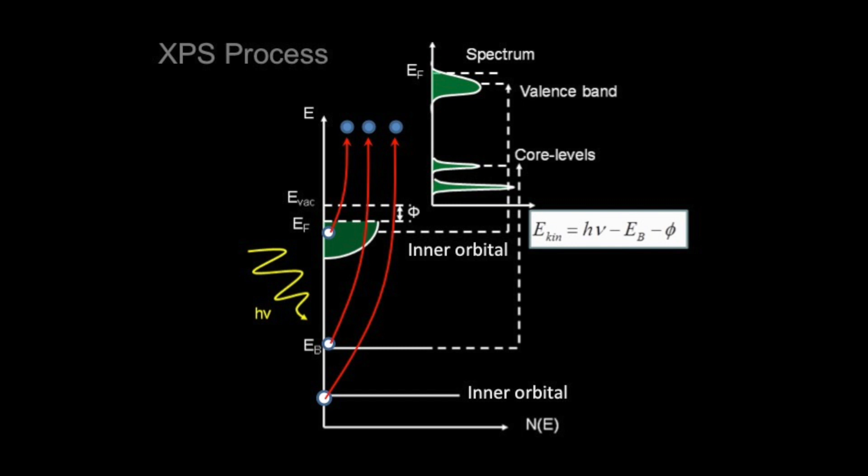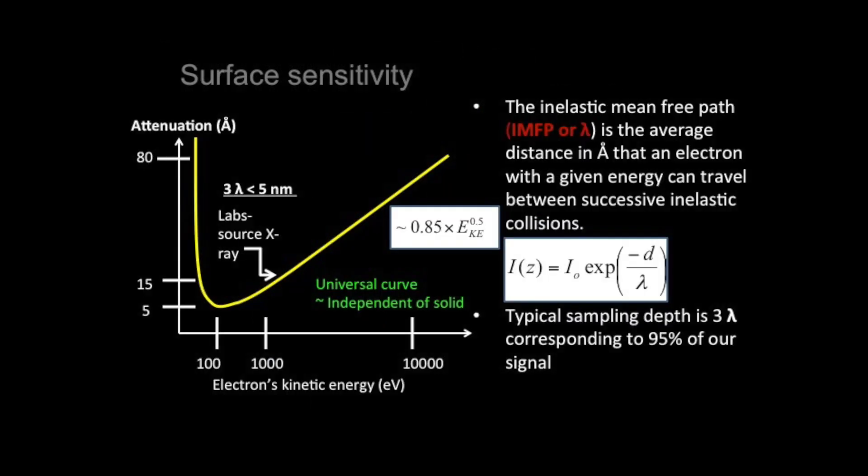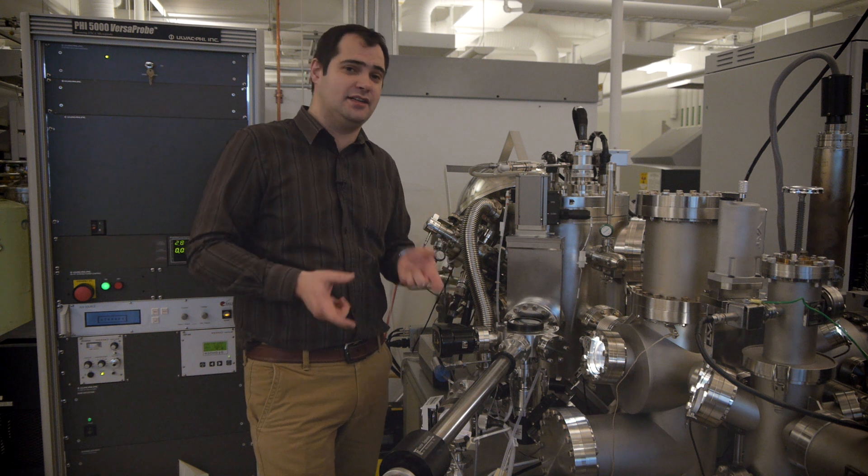Because of the nature of the energy of the X-rays and the UV light we send in, the photoelectrons that we measure will typically come from the topmost layers. As a result, our composition is from near the surface.